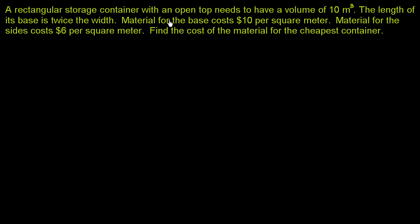A rectangular storage container with an open top needs to have a volume of 10 cubic meters. The length of its base is twice the width. Material for the base costs $10 per square meter, and material for the sides costs $6 per square meter. Find the cost of material for the cheapest container.